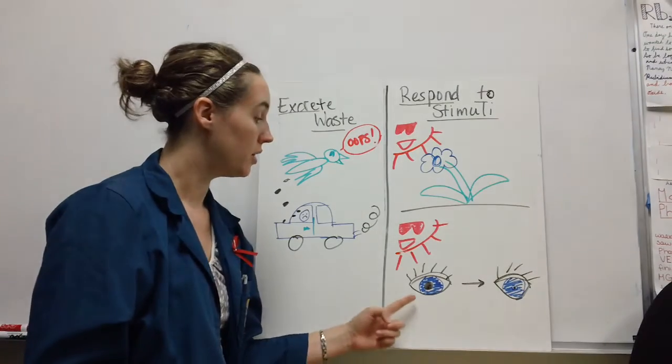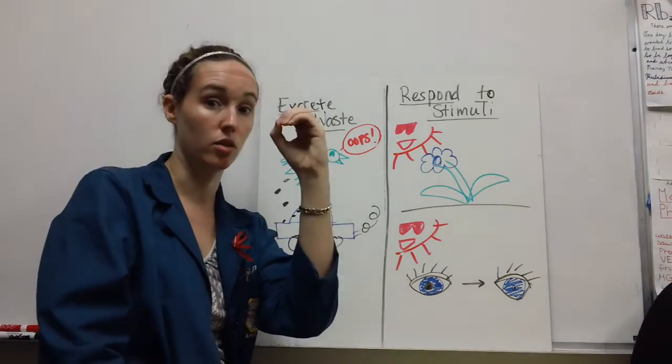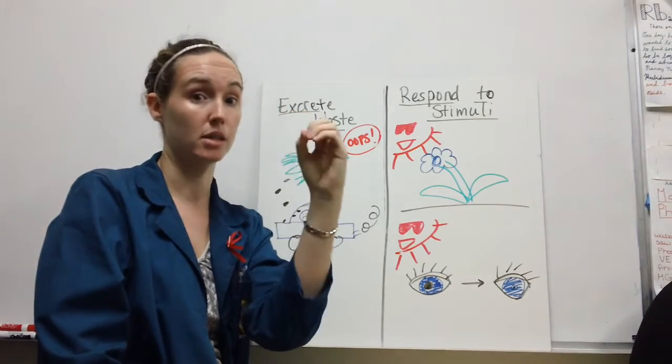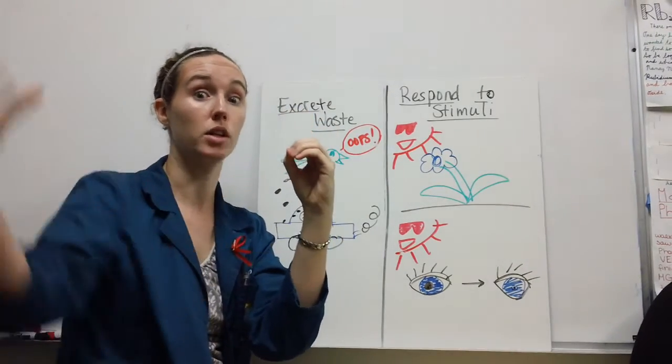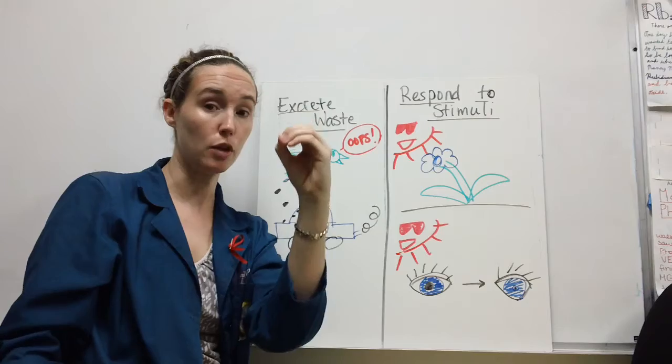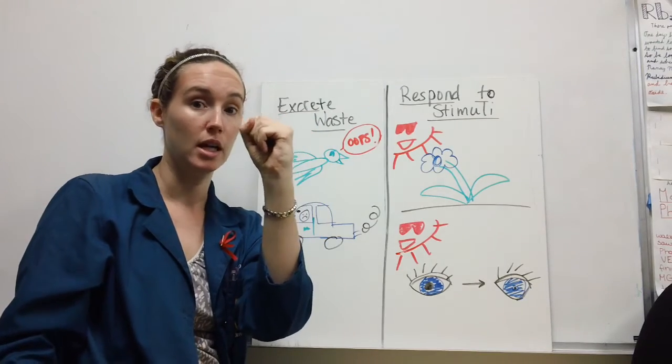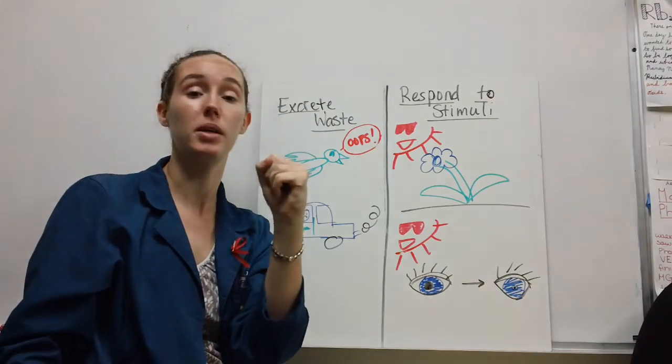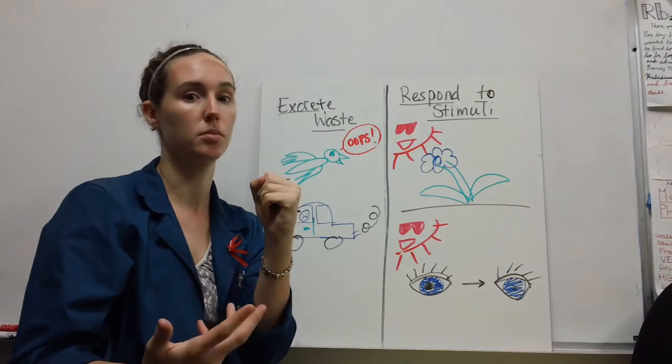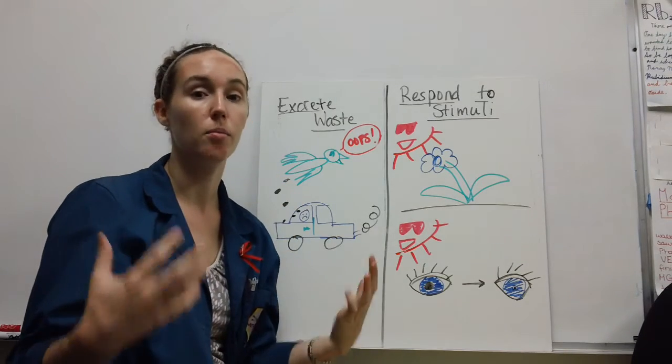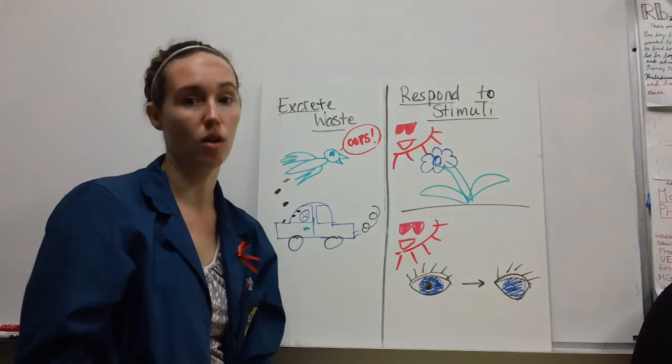In this example here, when human eyes are exposed to light, the irises that are normally open to leave big pupils shrink when there's bright light, so less light comes in. Even that is a response to a stimulus. These are the eight most important characteristics of all living things.